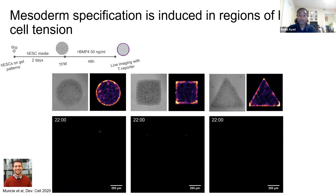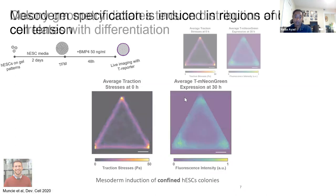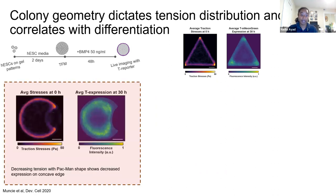We can modulate this by changing colony geometry and the forces present. Using a Pac-Man shape with a concave region, you get lower traction stresses in the concave mouth, and by decreasing tension with this different geometry, the average T expression is correspondingly lower in that low-contractility area. An average of several colonies confirms that the highest contractility correlates with where T expression emerges after differentiation.